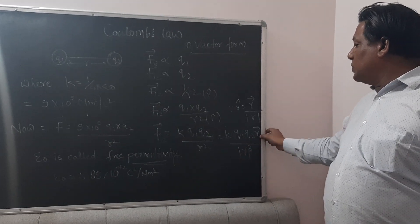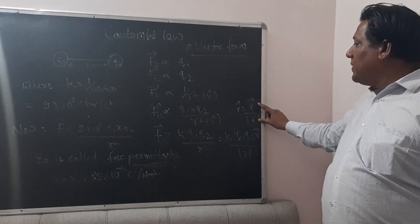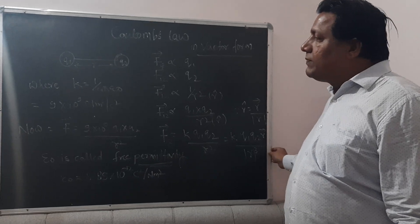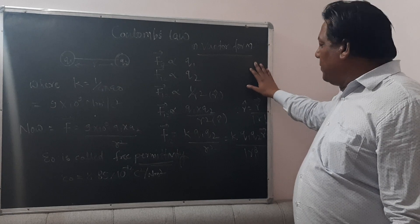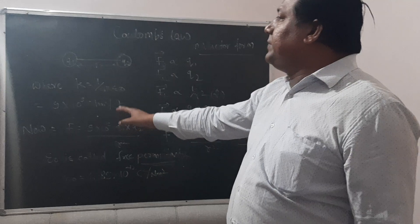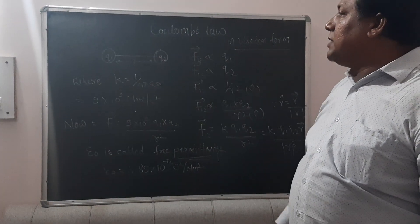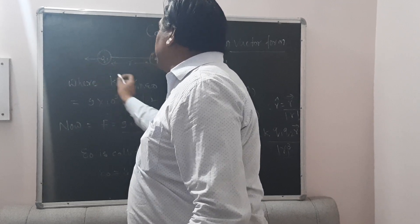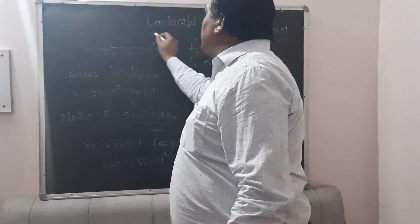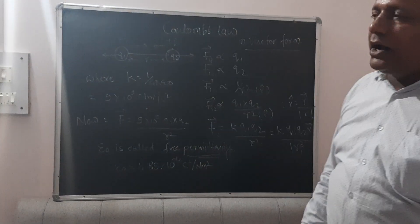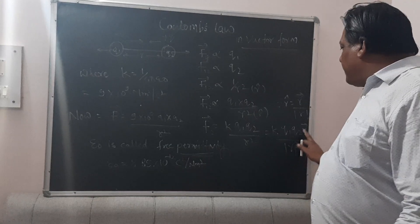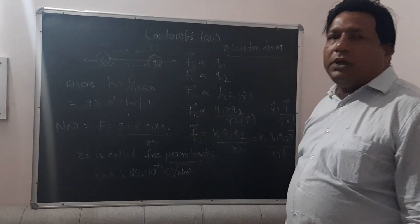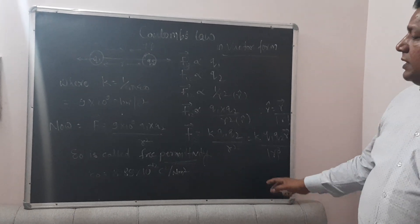The unit vector r-hat equals the vector r divided by its magnitude. So the force in vector form is F = k·q1·q2·r / r³. Placing the value of the r vector, we can replace the unit vector mathematically — the magnitude of the answer doesn't change, but it gives us information about direction. For example, if both charges are +q, the force is repulsive and acts outward; if one is −q and the other is +q, the force is attractive. Directions are determined using vector laws.